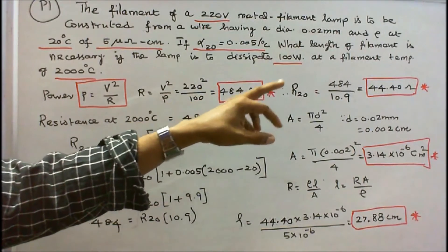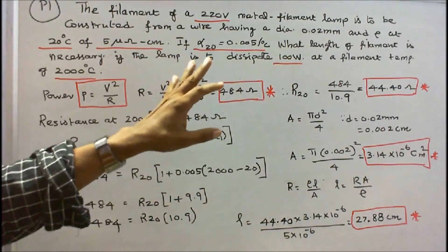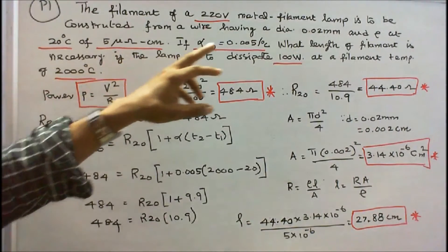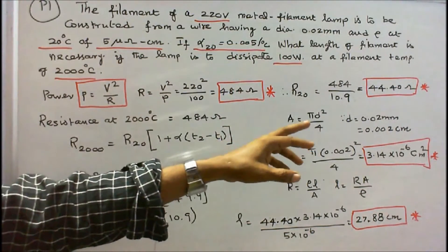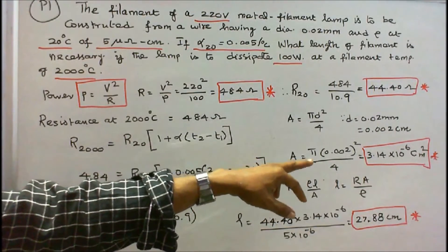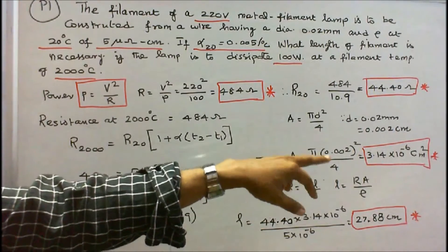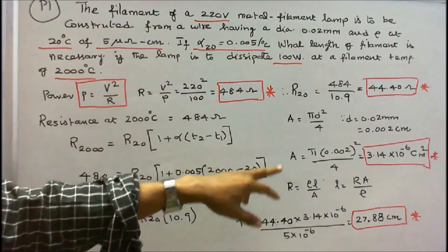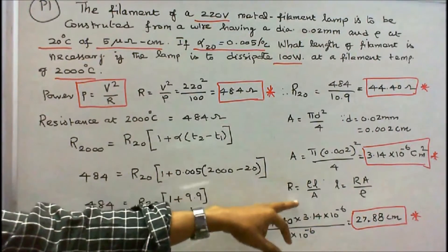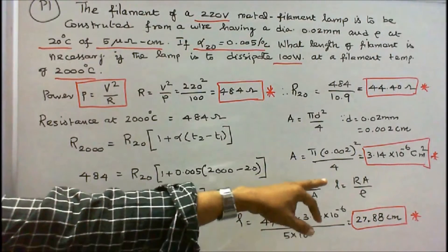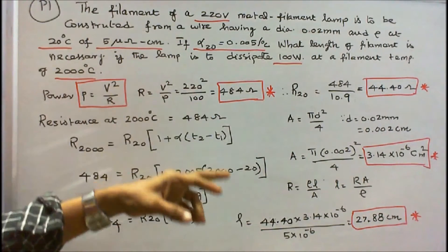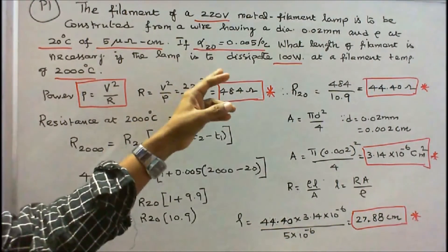Resistance at 20 degree centigrade is equal to 44.40 ohms. We have to find the length. The diameter is 0.02 mm, which I convert to centimeter: 0.002 centimeter. Area is equal to pi D squared by 4, which equals pi into 0.002 squared divided by 4, giving 3.14 into 10 to the power minus 6 centimeter square. With resistance 44.40 ohms and resistivity 5 into 10 to the power minus 6, using R equals rho L by A, L equals R into A divided by rho. Therefore L is equal to 27.88 centimeter. The required filament length is 27.88 centimeter to dissipate 100 watts.